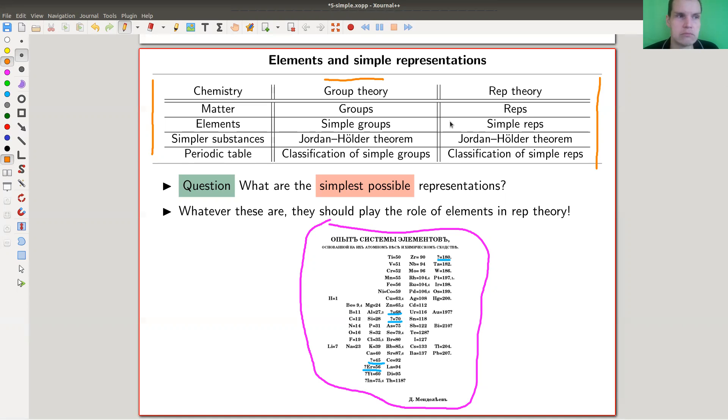I have chemistry on the left-hand side and I have representation theory on the right-hand side. And for comparison, I put in group theory because this analogy makes sense in other parts of mathematics as well. So in chemistry, you have something like matter. And on the side of representation theory, I think this corresponds to representations, right? So the things you would like to study. And elements in terms of chemistry corresponds to simple representations. And the simpler substances in chemistry, there will be a certain theorem which we won't see today, but there's a nice theorem called the Jordan-Hölder theorem.